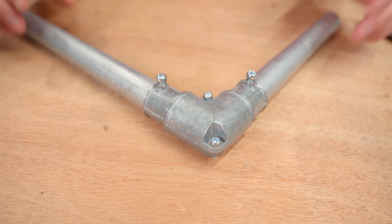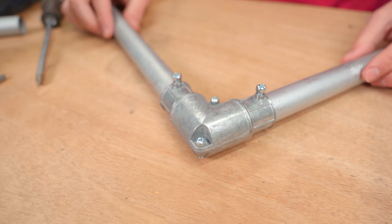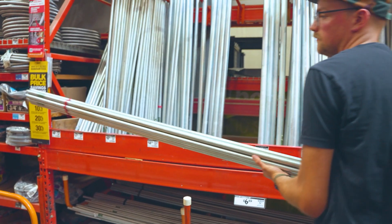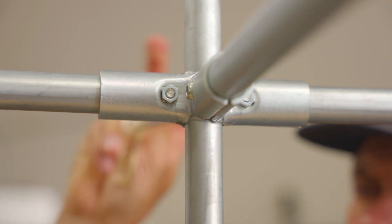This is an elbow that you'll find off the shelf at Lowe's, Home Depot, different places like that. It's made for electrical conduit, which we like to build with here at Maker Pipe, and so does our community.